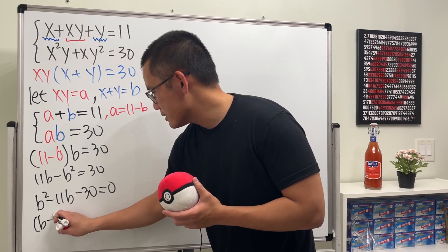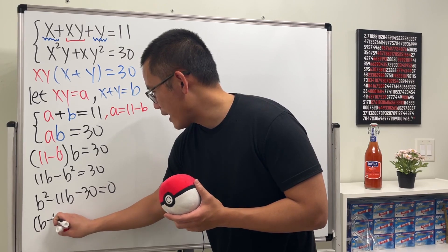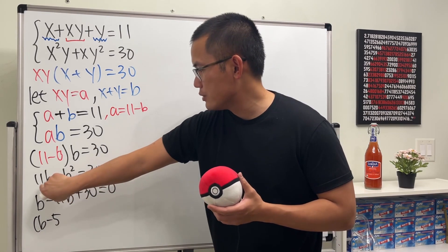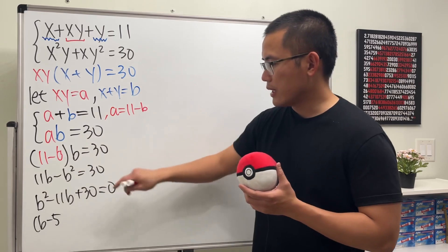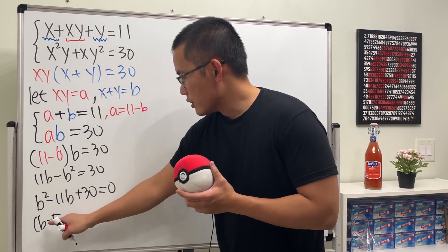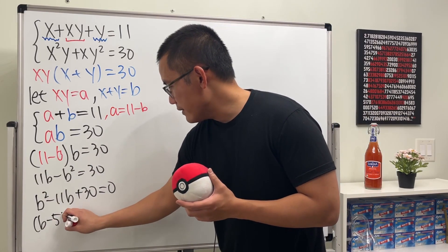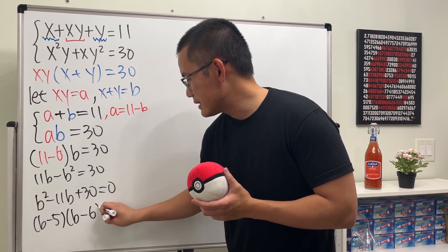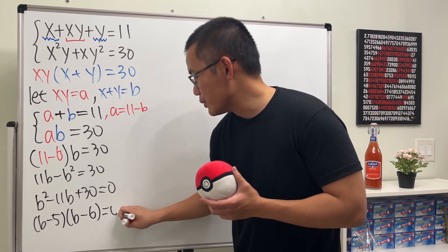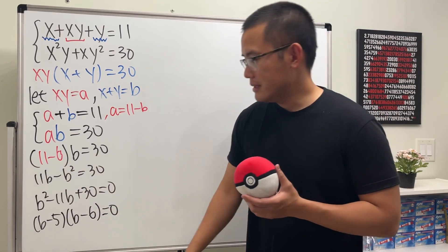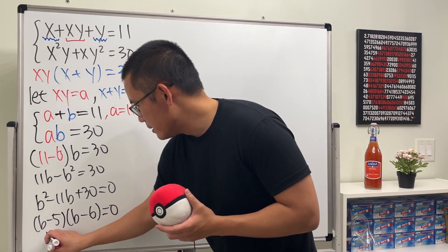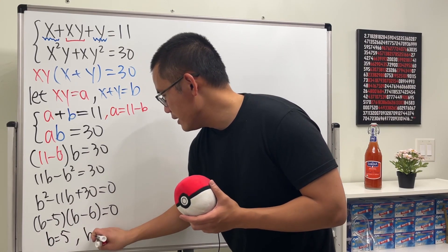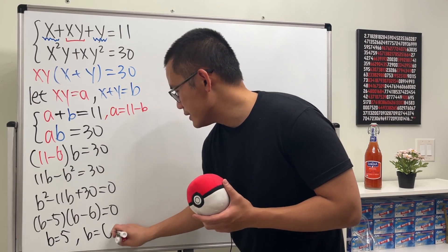Let's solve by factoring. We get (b minus 5) times (b minus 6) equals zero. So this means we have either b equals 5 or b equals 6.